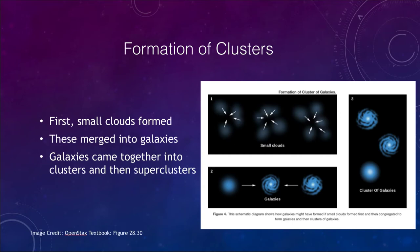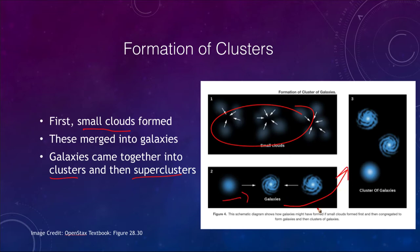How did clusters form? First we formed small clouds, which merged into galaxies, and then the galaxies came together into clusters of galaxies — things built up over time. It all comes down to dark matter being what started all of this. If it were not for dark matter, we would not have the structures we see in the universe today. There simply is not enough time for ordinary matter alone to have formed those large-scale structures — the filaments and voids that we have looked at.